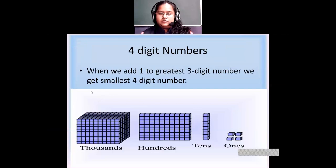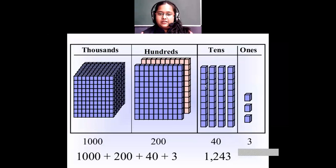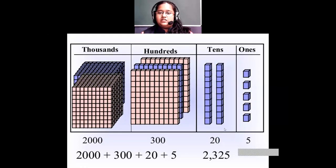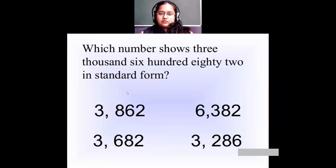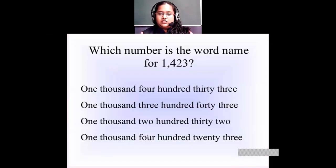In the last class we saw what are five digit numbers. Four digit numbers are numbers with four places: ones, tens, hundreds, and thousands. These blocks represent the numbers 1,243 and 2,325. Then here they asked which number shows 3,682 — that is 3,682 — and 1,423, which is the last option. We saw all this.